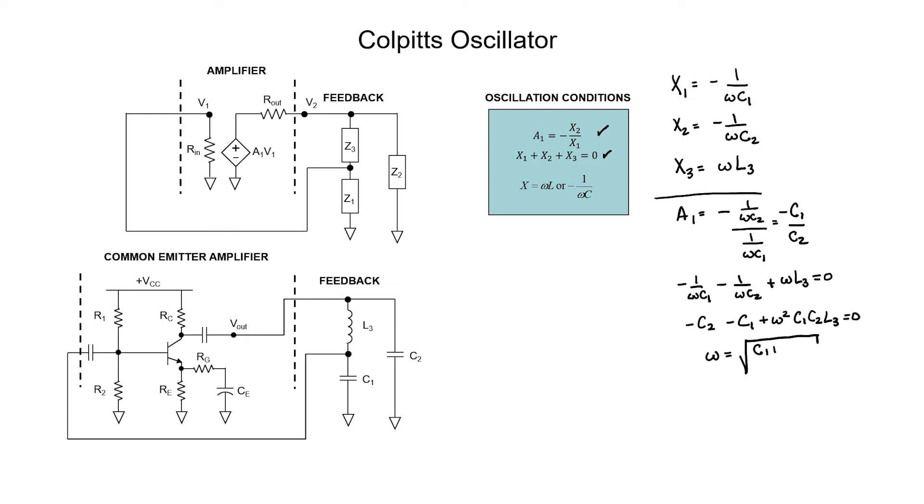We now have our frequency of oscillation. If we wanted to make the Colpitts oscillator tunable in frequency, it would be a bad idea to adjust capacitors C1 or C2 because that would change the conditions on the gain.